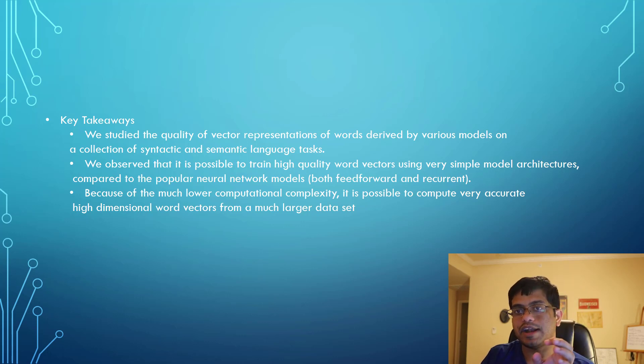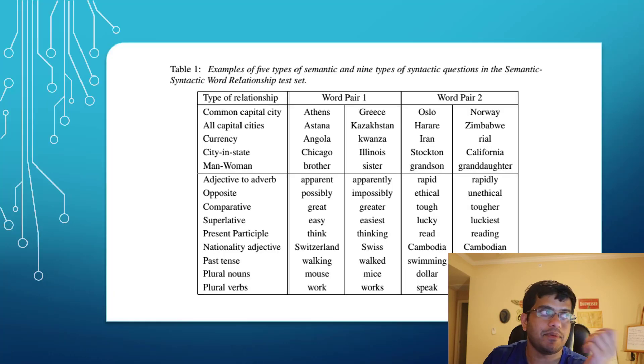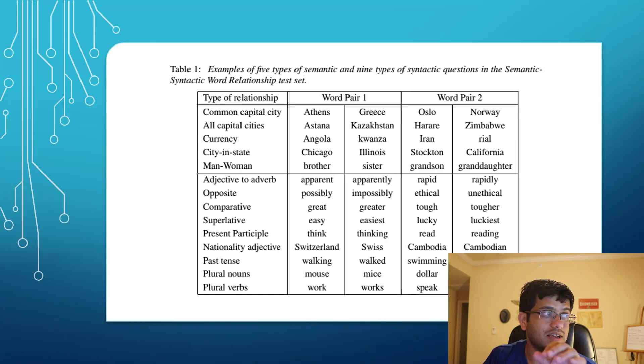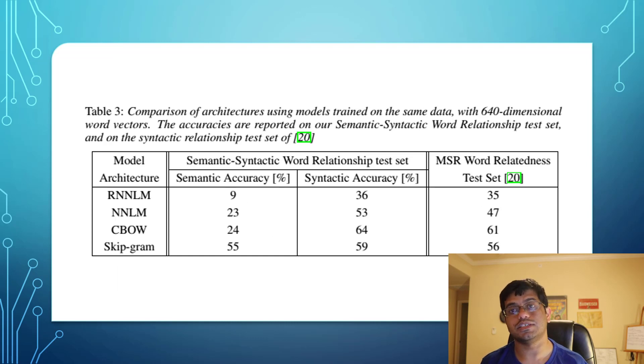Let's talk about syntactic and semantic similarities. Some examples they quoted in the paper include common capital cities like Athens to Greece, Oslo to Norway; city and state like Chicago, Illinois to Stockton, California; or currencies like Angola to Kwanza, Iran to Rial. Similarly, it could be done on syntactic ways like comparative grade to grade, or tough to tougher. This is pretty awesome to be able to derive those results from word vectors. This is very powerful.